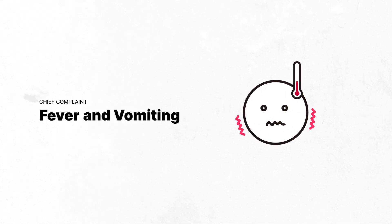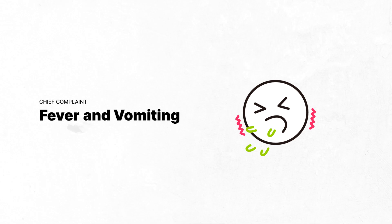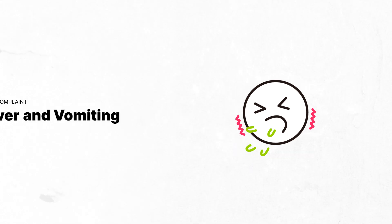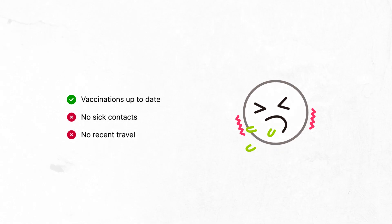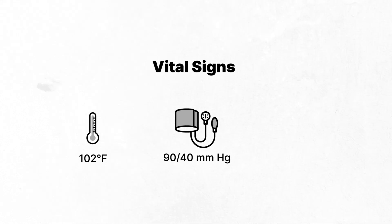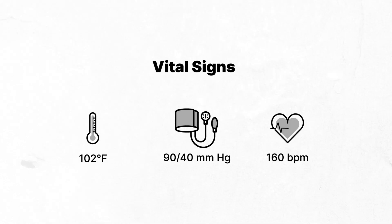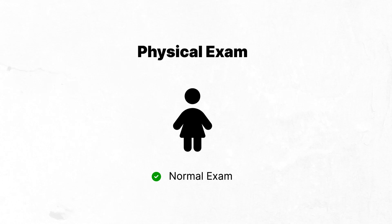A one-year-old girl presents with a fever and vomiting for the past 24 hours. The patient and her parents deny any other signs and symptoms. The patient is up to date with her vaccinations and has no sick contacts or recent travel history. Her temperature is 102 degrees Fahrenheit, blood pressure is 90 over 40, and heart rate is 160 beats per minute. Her physical exam is unremarkable without abnormalities or deficits.